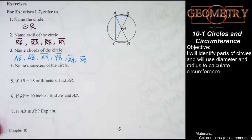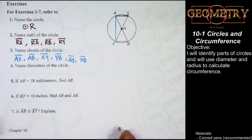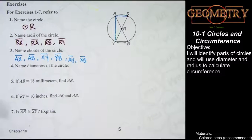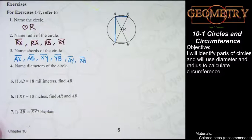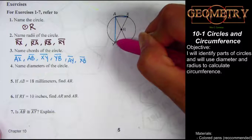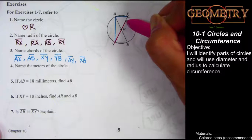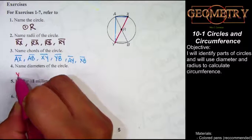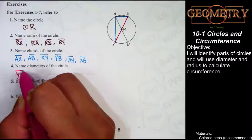Number 4 is asking you to name the diameters of the circle. Recall that diameters are chords that pass through the center of the circle. Number 1, when we named the circle, gave us the center as R. So we need to look for chords that pass through point R. If we go from Y to X, we have to pass through R along the way, so one of the diameters in this circle is line segment YX.